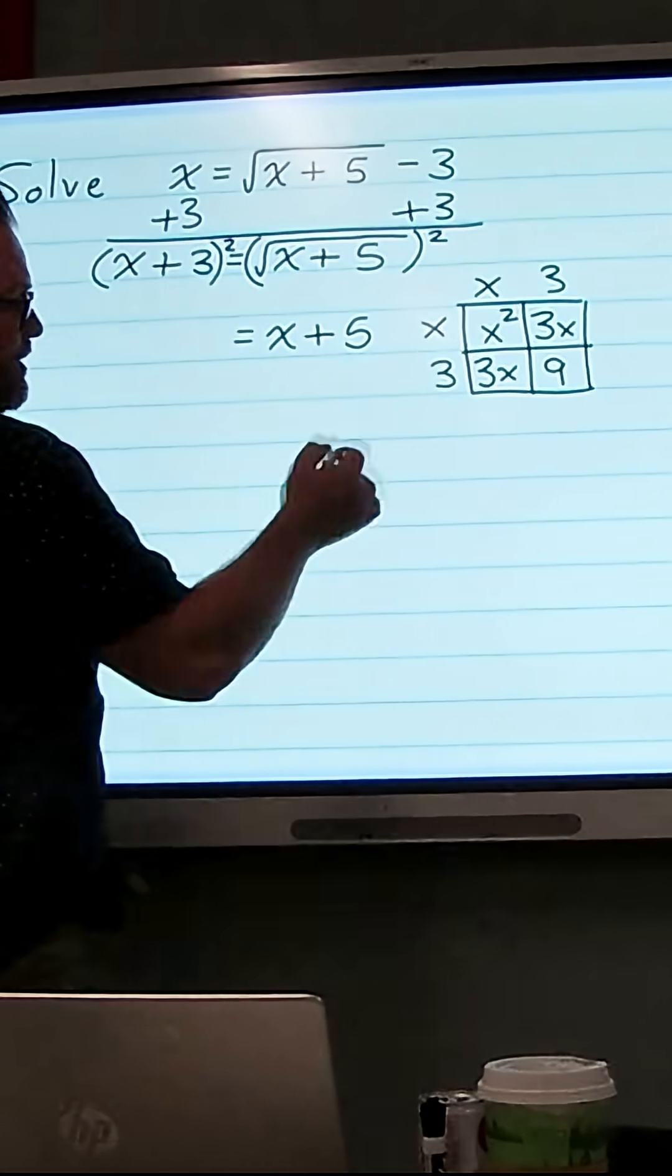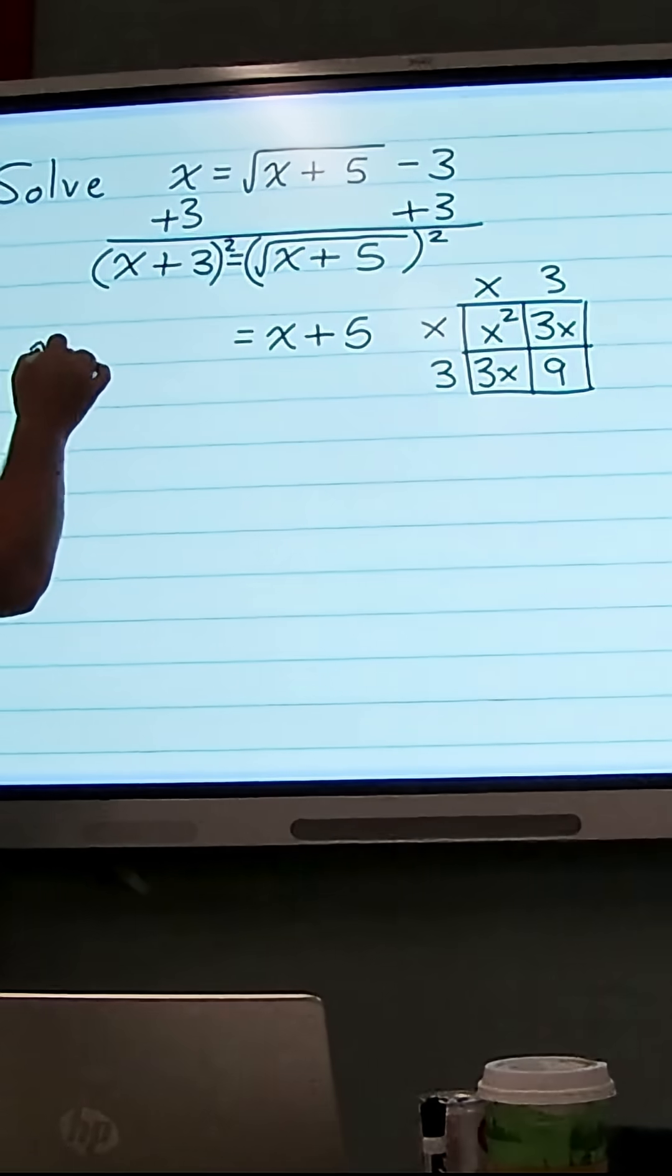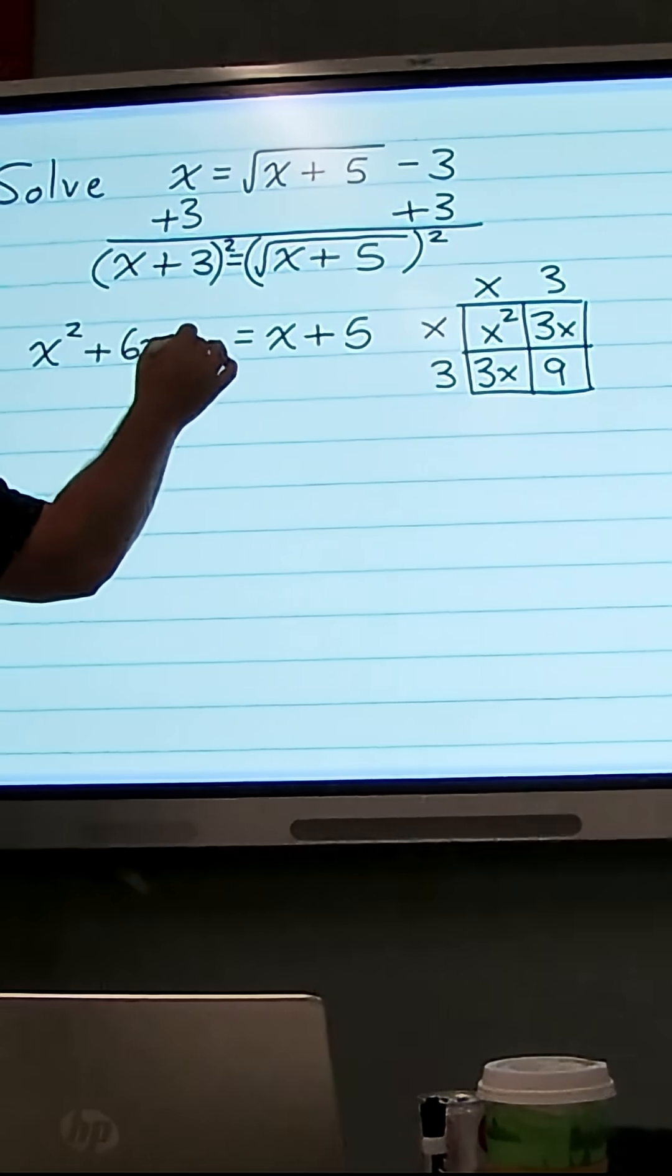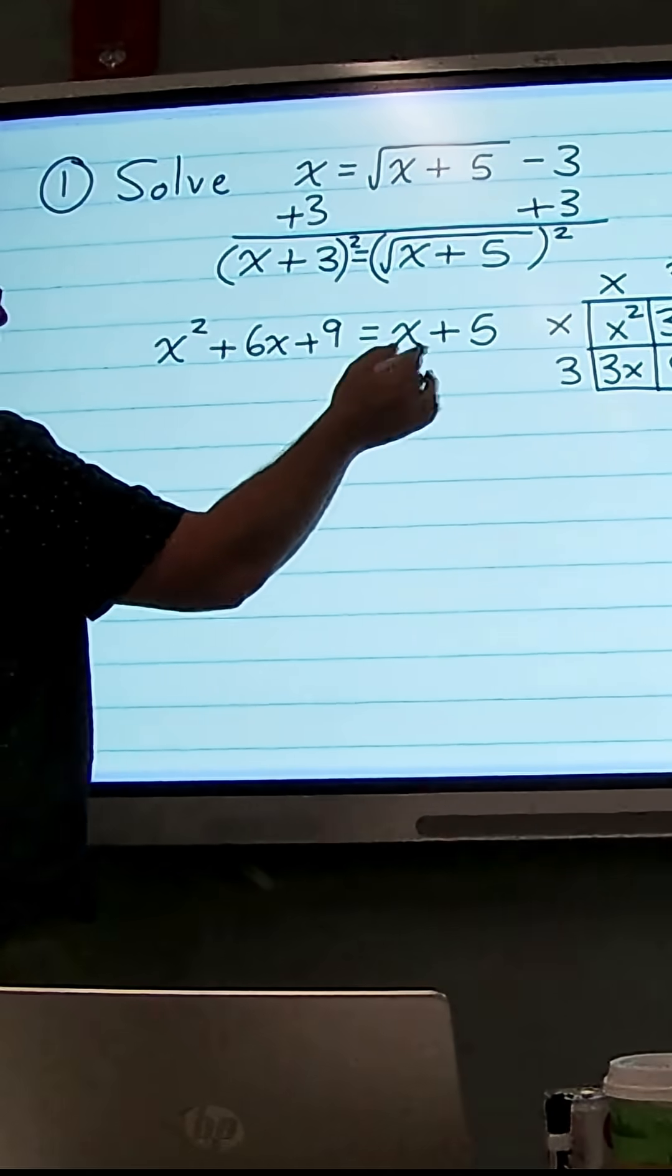We can combine 3x and 3x to get 6x, so on the left-hand side we get x squared plus 6x plus 9, and then that's going to equal x plus 5.